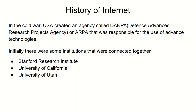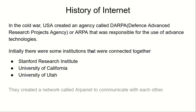Initially there were some institutions that were connected together in the DARPA agency. Some of them are Stanford Research Institute, University of California, and University of Utah. These institutions were connected under the DARPA agency. They created a network called ARPAnet to communicate with each other.